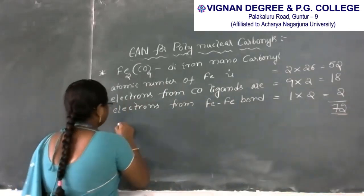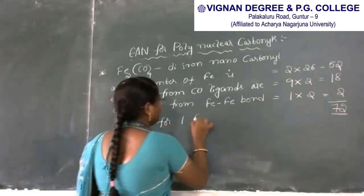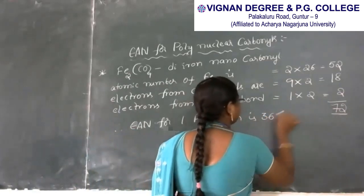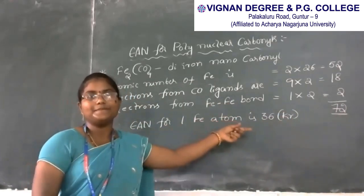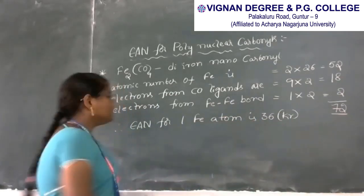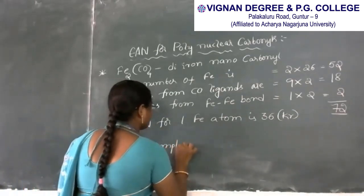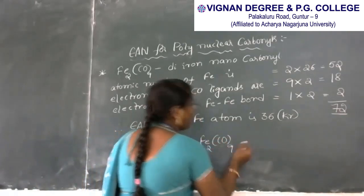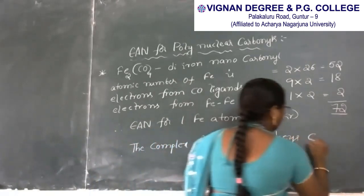Total EAN for di-iron nonacarbonyl is 72. EAN per 1 iron atom is 72 divided by 2, which is 36. Since 36 equals the atomic number of krypton, this complex also obeys the EAN rule.